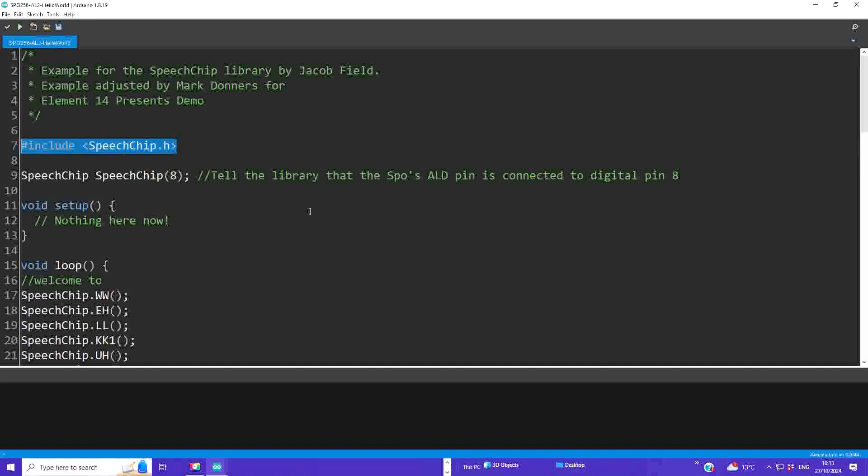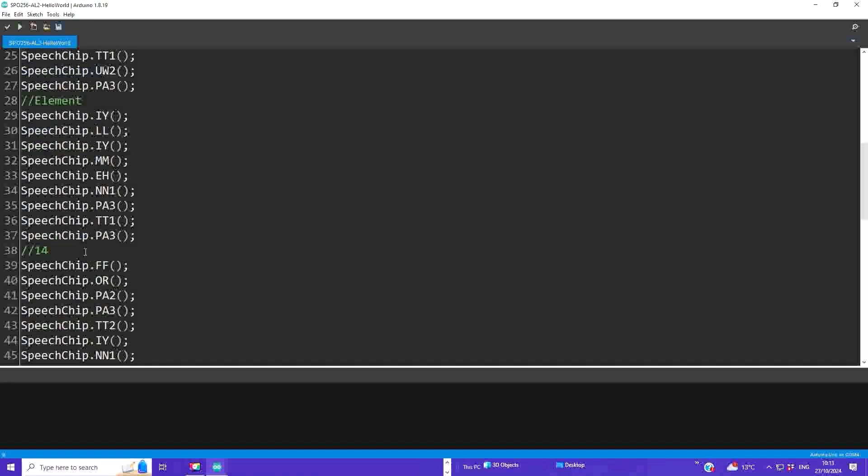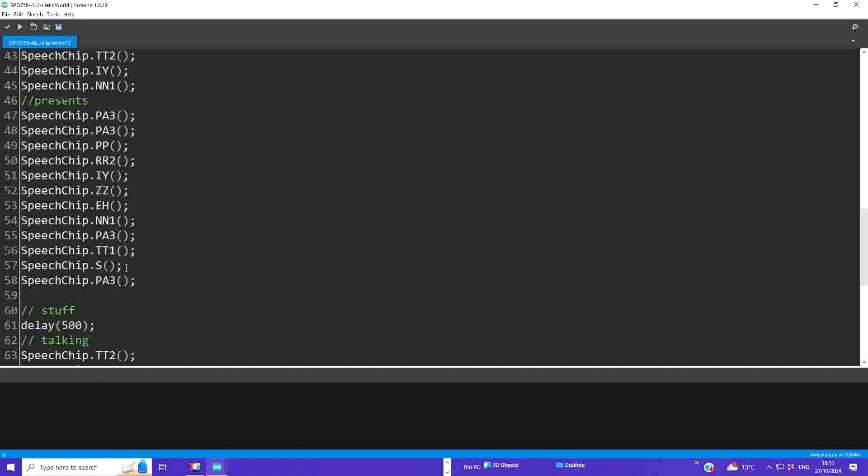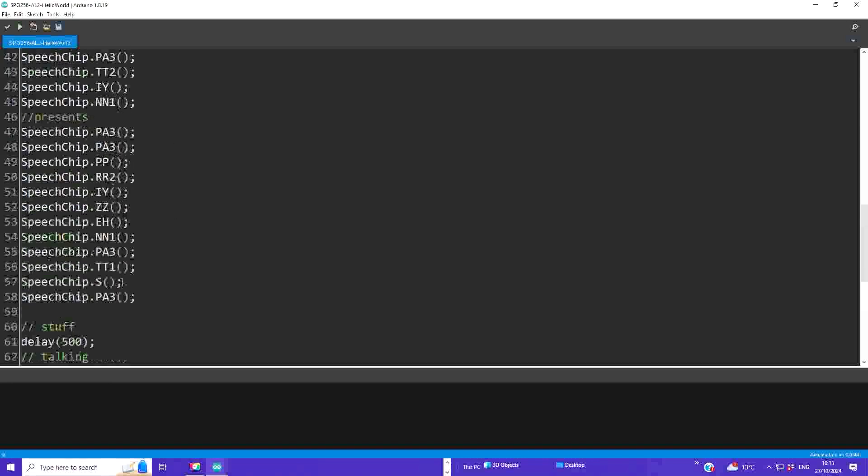First we include our library, and we define the one line that's important to communicate with the chip without, of course, the data bus. And that's going to be pin 8 for us. And then what we do in the setup is nothing. That's easy. And for the main loop, all we do is repeat a few words, and we say welcome to Element 14 presents talking memories. And after one second, we'll keep repeating that in a loop.